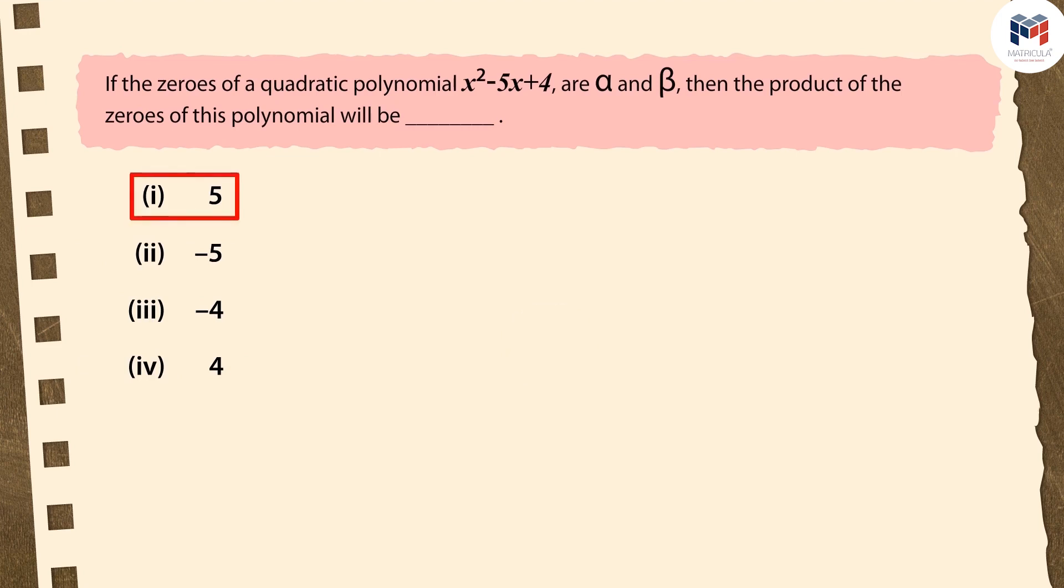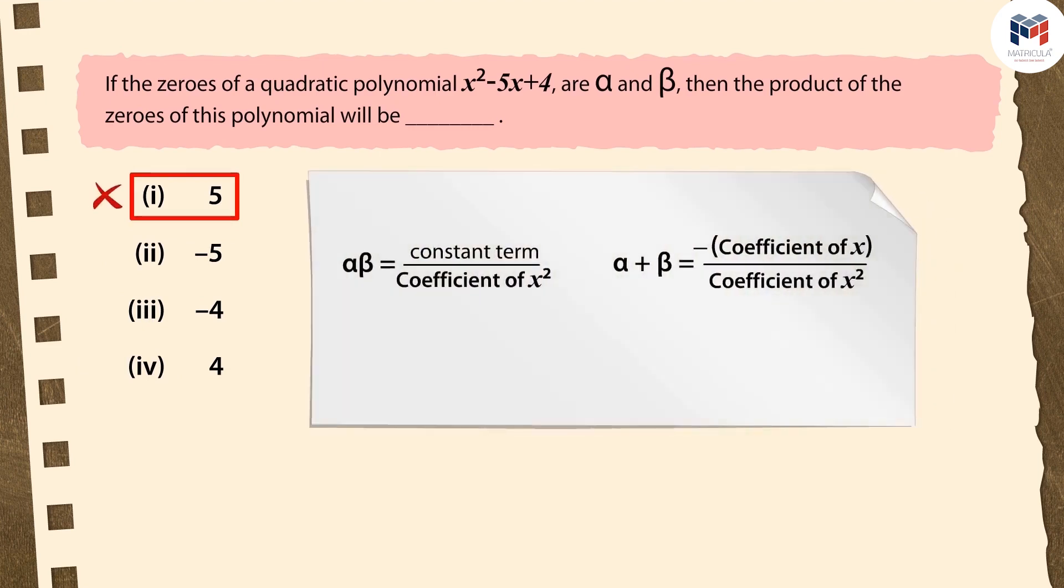If you have selected the first option, then you have chosen the wrong answer. Your answer is incorrect because you used the incorrect formula. You did not use the formula for the product of zeros here. You have used the formula for their sum.